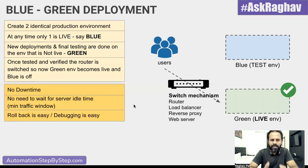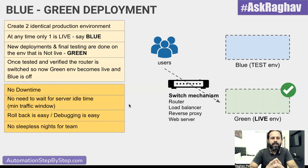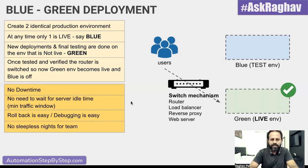Rollback, if required, will be very easy. If we need to do a rollback, we still have the other environment where the issue happened and we can do analysis and debugging there. The DevOps team, the dev team, and operations team will not have any sleepless nights. They can very easily do deployments, switch, and do rollbacks if necessary. There will be no user loss and no business loss.